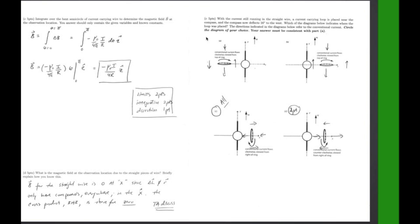current carrying loop is placed near the compass and the compass now deflects 16 degrees to the west. Which of the diagram flow indicates where the loop was placed? The direction indicates in the diagram below referred to the current.